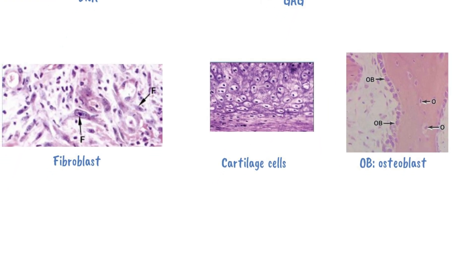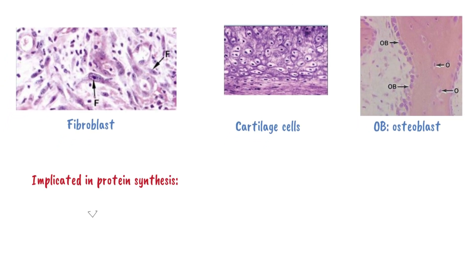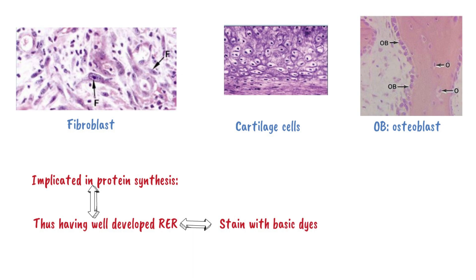Why are the cytoplasms of these cells basophilic? Basophilic means they stain with basic dyes. The cytoplasm of these cells has very well-developed rough endoplasmic reticulum (RER). The RER contains ribonucleic acid, and ribosomes attached to the RER also contain ribonucleic acid, which is negatively charged — making them acidic components that bind with basic dyes, thus making these structures basophilic. So the cytoplasm of these cells is rich in well-developed RER, which is why they stain with basic dyes.